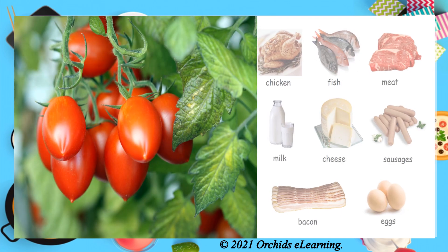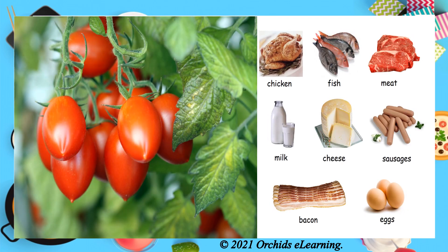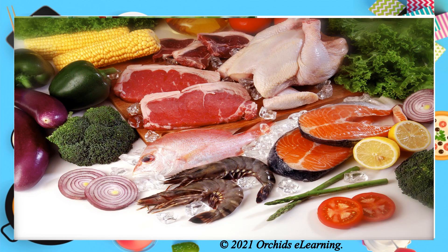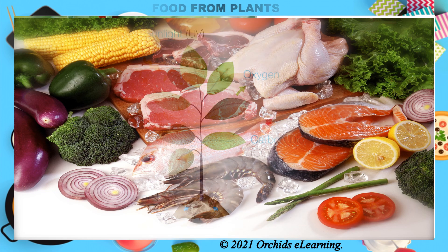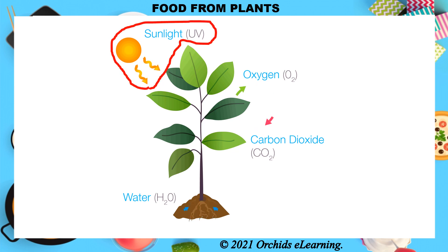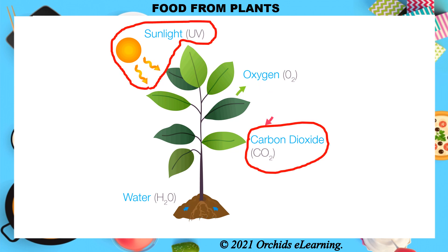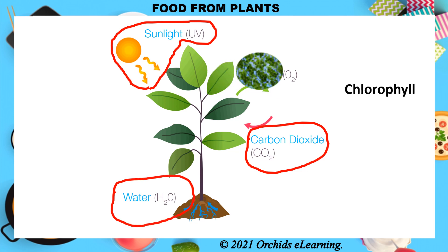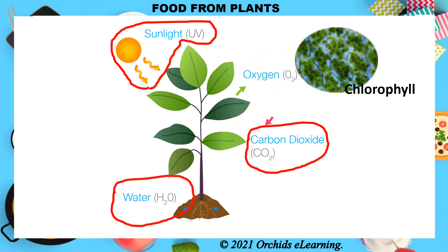We get our food from both plants and animals. Thus, plant parts and animal products are our main sources of food. Let us first learn about food from plants. Green plants prepare their own food. They use light, air, carbon dioxide, water, and chlorophyll to prepare their food by the process of photosynthesis.